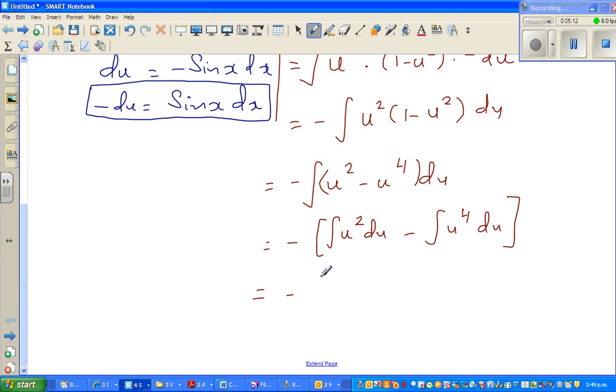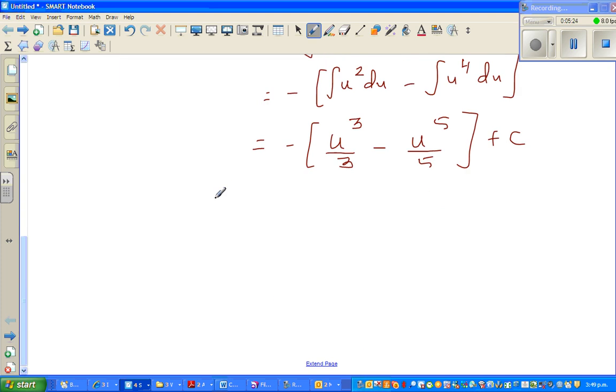This minus is sitting out. So minus integration of u squared is u cubed over 3 minus u to the power 5 over 5 plus the arbitrary constant. So if you open the bracket, this is minus u cubed over 3 plus u to the power 5 over 5 plus c.